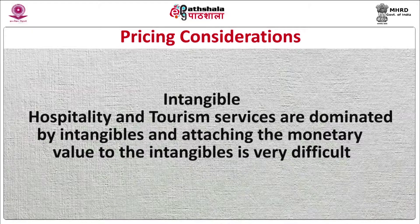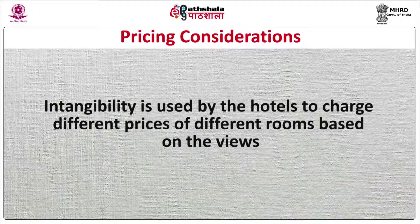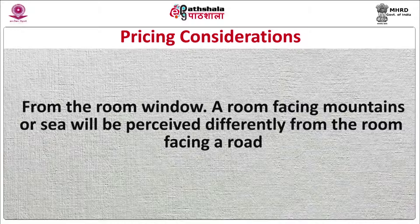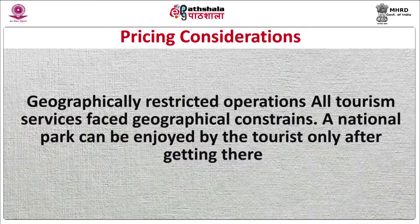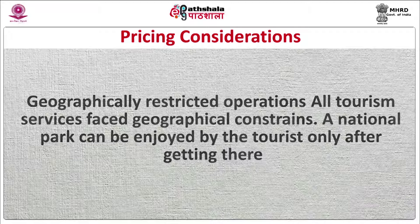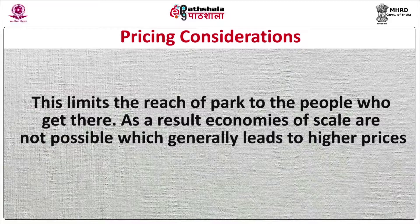Number two, Intangibility. Hospitality and tourism services are dominated by intangibles, and attaching a monetary value to intangibles is very difficult. Intangibility is used by hotels to charge different prices for different rooms based on the views from the room window — a room facing mountains or sea will be perceived differently from a room facing a road. Number three, Geographically Restricted Operations. All tourism services face geographical constraints. A national park can be enjoyed only after getting there, which limits the park's reach. As a result, economies of scale are not possible, which generally leads to higher prices.